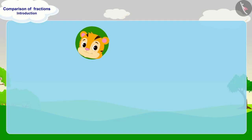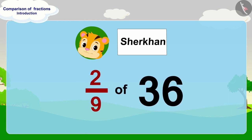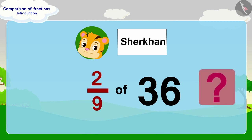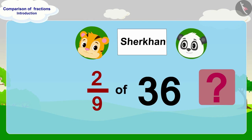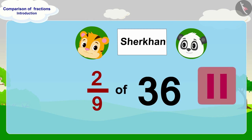Now Shere Khan has written his name on two ninth parts of 36. Can you tell how many pieces of paper Shere Khan has written his name on? Is it less than Golu's pieces or more? If you wish to, you can stop this video and find the answer.